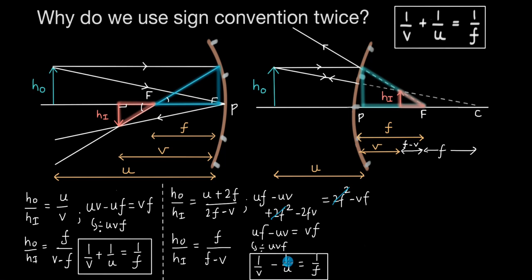We see that we got a different formula for the convex case. And there can be many more cases — for example, a virtual object gives yet another formula: 1/U minus 1/V equals 1/F. So for different cases, we are getting different mirror formulas, and it becomes difficult to remember which formula belongs to which case. That is the problem. To solve that problem, we apply sign convention.